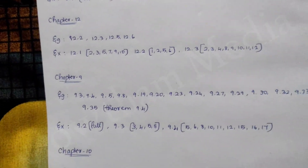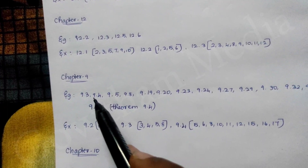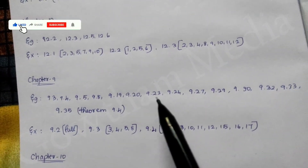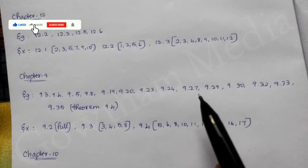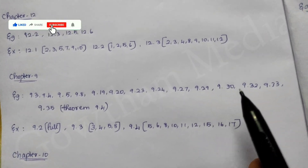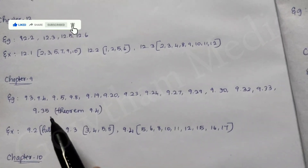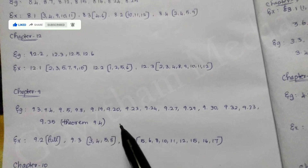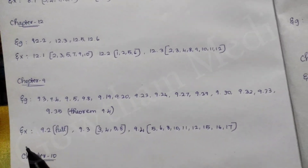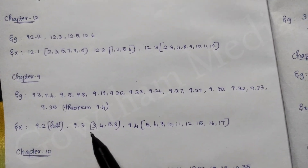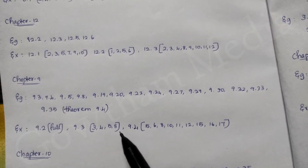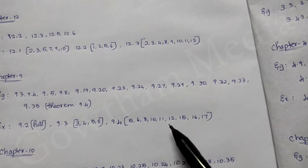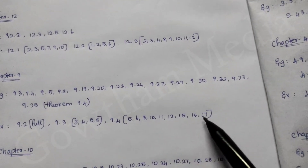That is the 9th chapter. Examples: 9.3, 9.4, 9.5, 9.8, 9.19, 9.20, 9.23, 9.24, 9.27, 9.29, 9.30, 9.32, 9.33, 9.35. Exercise 9.4 — 9.2, 9.3, 9.4 — 11th, 12th, 15th, 16th, 17th.